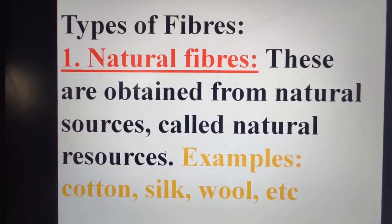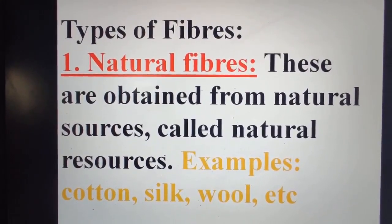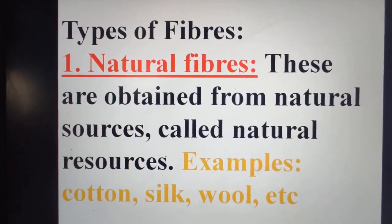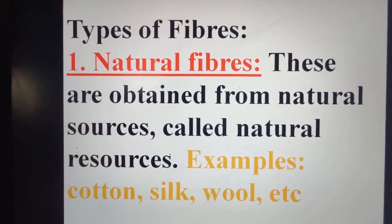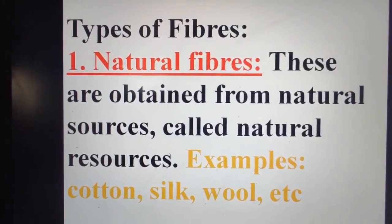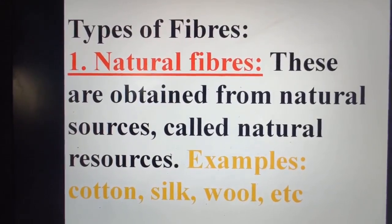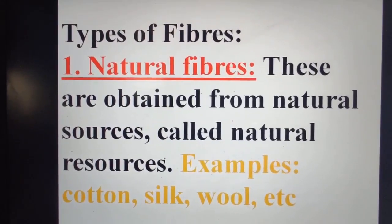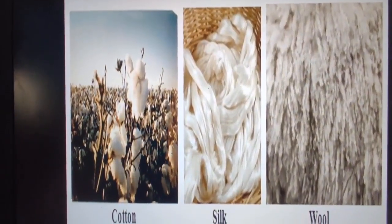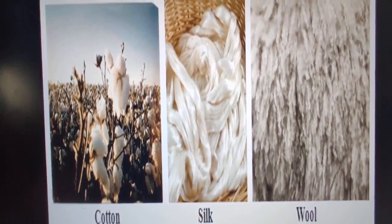Natural fibers are obtained from natural sources. Cotton comes from a plant; silk is obtained from silkworms, and the rearing of silkworms is known as sericulture. Wool again comes from an animal. So all these things already existing in nature are known as natural fibers — cotton, silk, and wool.